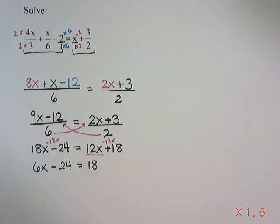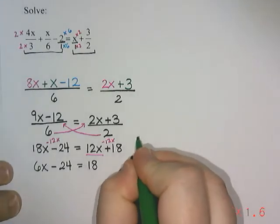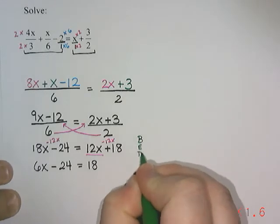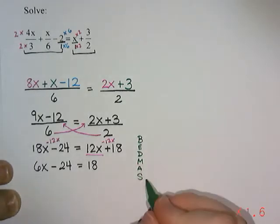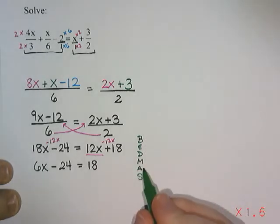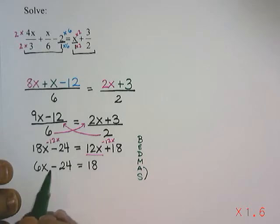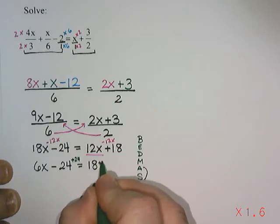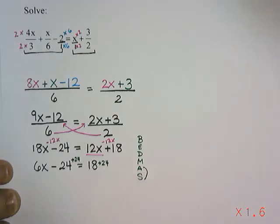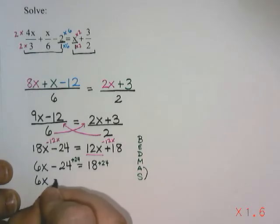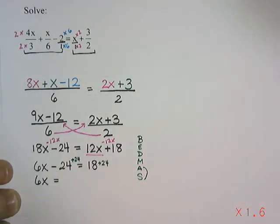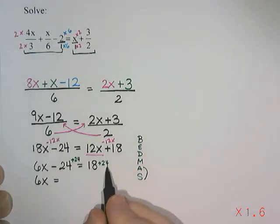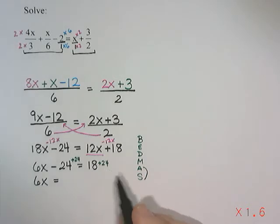And then when we're solving the equation, we want to do opposite order of operations. So normally order of operations, we do BEDMAS. So opposite, we're going to do SAMDEB. So first thing we look for is any addition or subtraction. Here we're subtracting 24, so we're going to do the opposite and add 24. So I have 6x left on the left, negative 24 plus 24 is 0, and 18 plus 24 gives me 42.